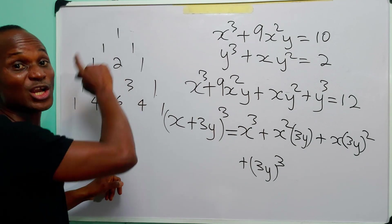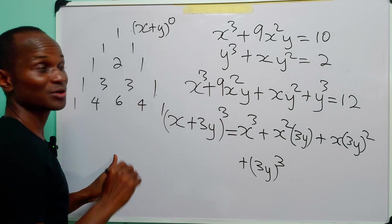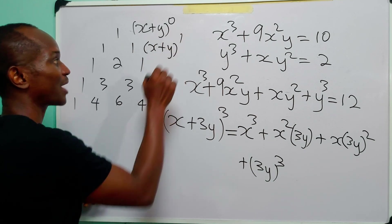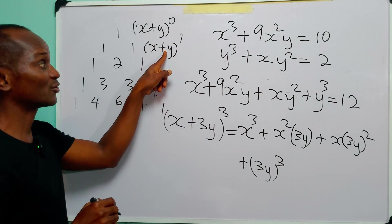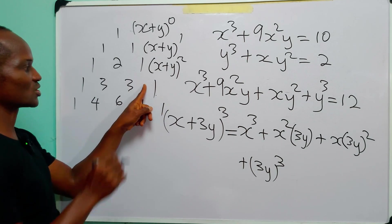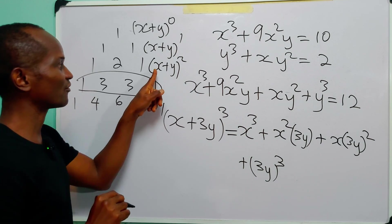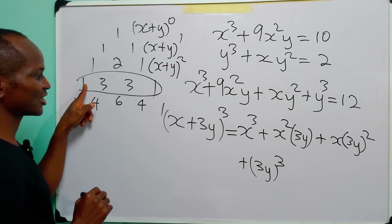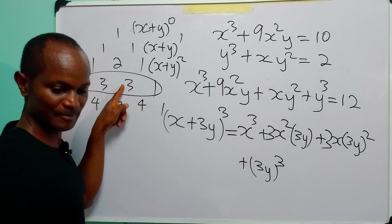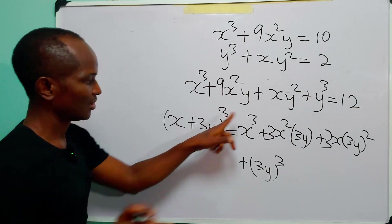The first row of Pascal's triangle gives coefficients for (x+y)⁰, the second for (x+y)¹, the third for (x+y)², and the fourth — which is what we need — gives the coefficients 1, 3, 3, 1 for the expansion of (x+y)³.